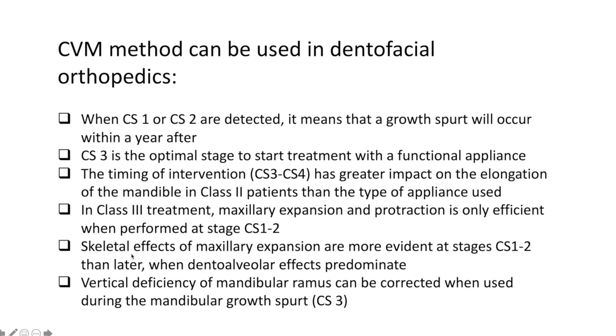Skeletal effects of maxillary expansion are more evident at stages one and two than later when dentoalveolar effects predominate. Vertical deficiency of mandibular ramus can be corrected when used during the mandibular growth spurt, which occurs at cervical stage three: concave, concave, flat.